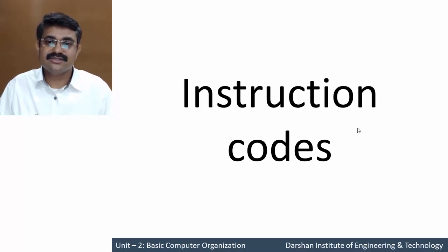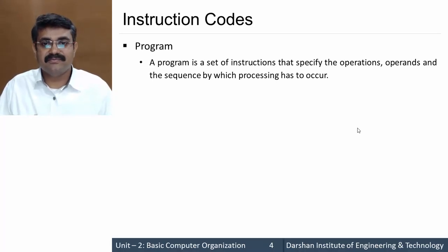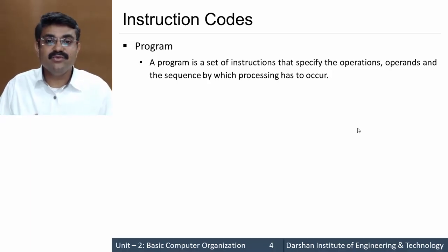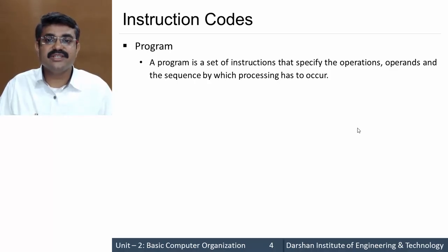In this session we'll discuss instruction codes. Before discussing instruction codes, let us define program. A program is a set of instructions that specifies the operation, operand, and the sequence by which processing has to occur — where the operation can be addition, subtraction, multiplication, etc., and the operand can be a register operand or a memory operand.